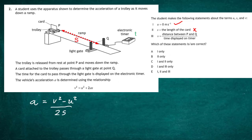The student's third statement is that v equals the distance between P and Q divided by the time displayed on the timer — this is also wrong. To find the instantaneous velocity at position Q, you must use the length of the card divided by the time it takes to pass through the light gate: v = card length / t. Using the distance PQ instead of the card length is incorrect. So only the first statement (u = 0) is correct, and the answer to question two is letter A.